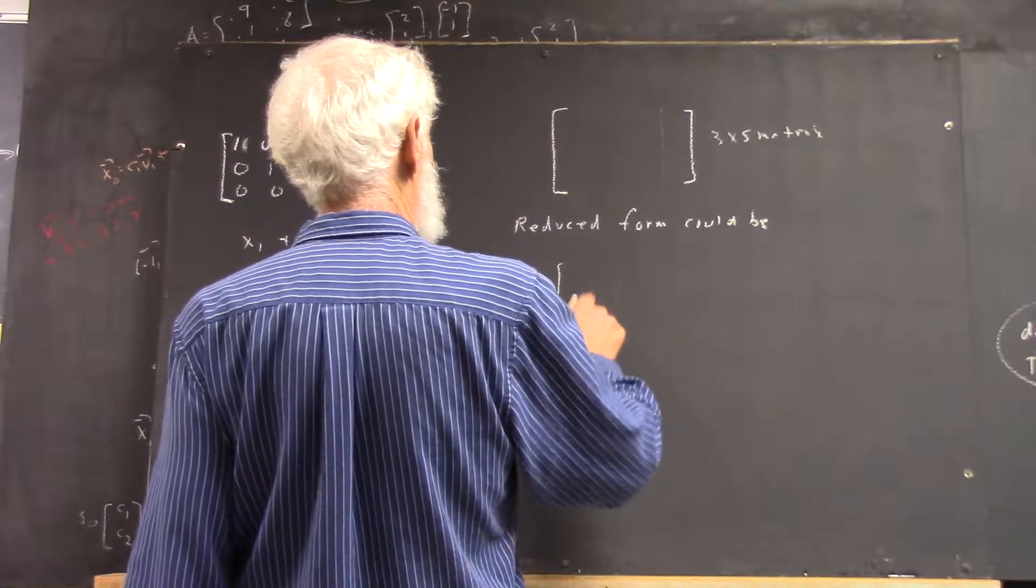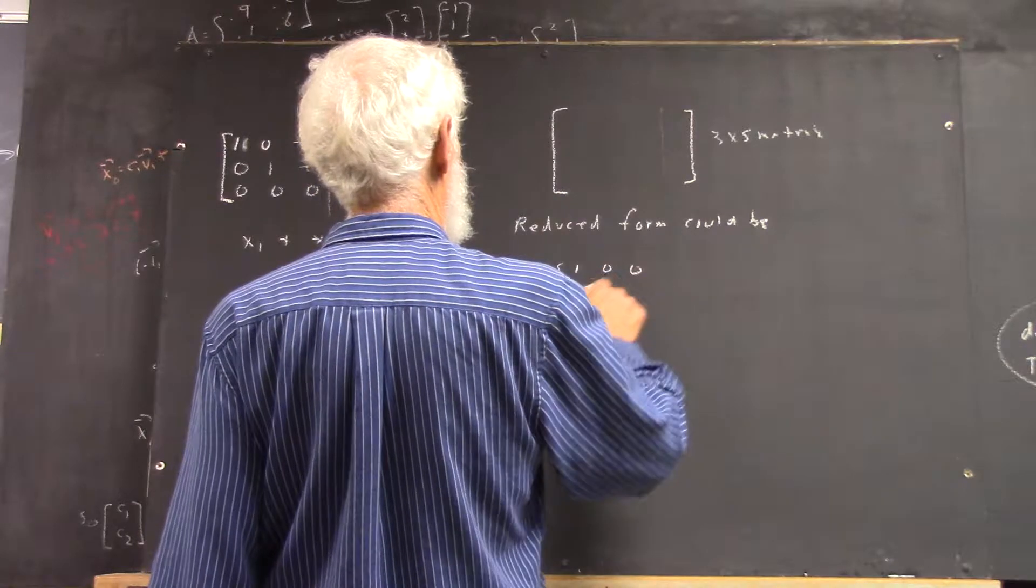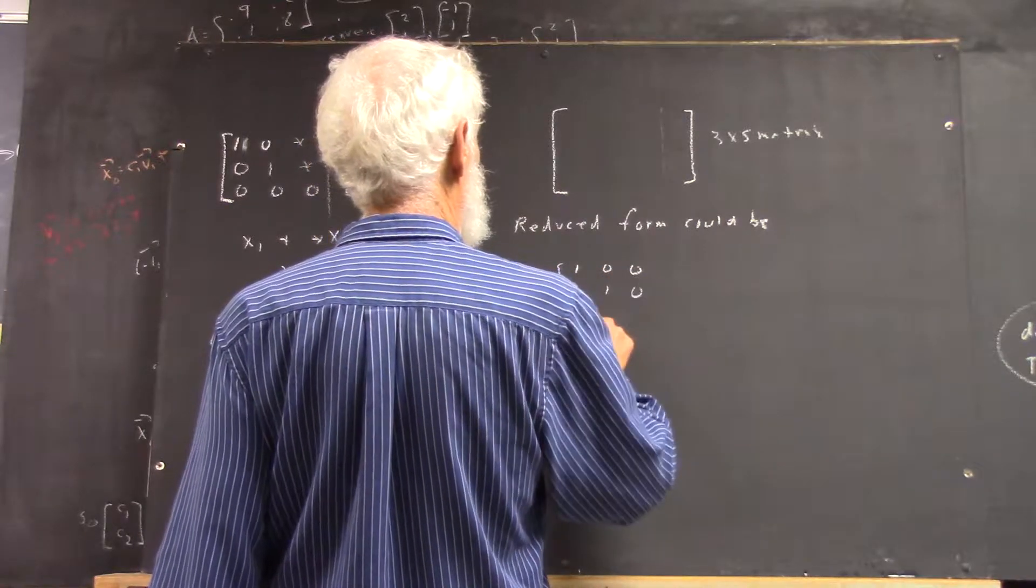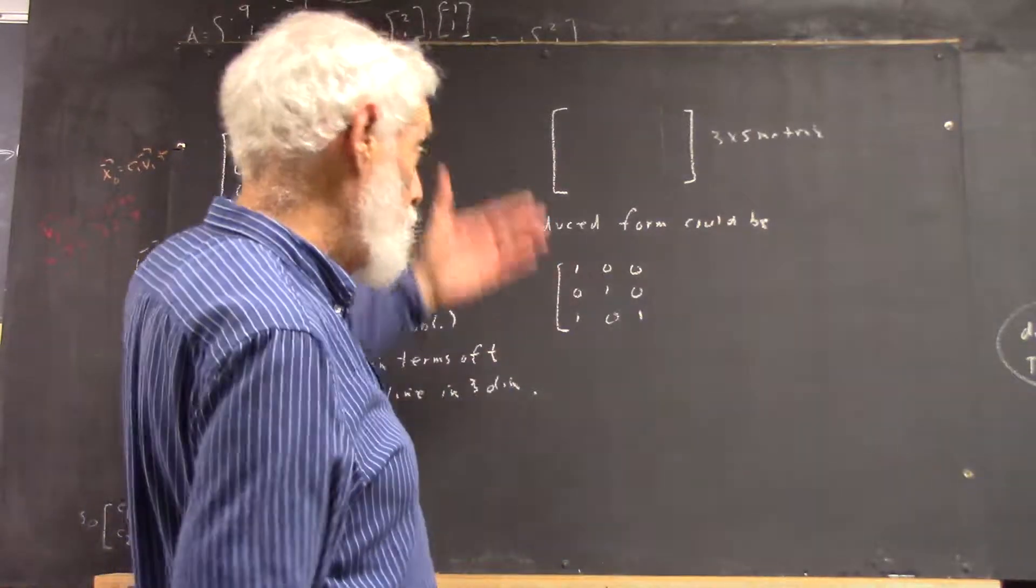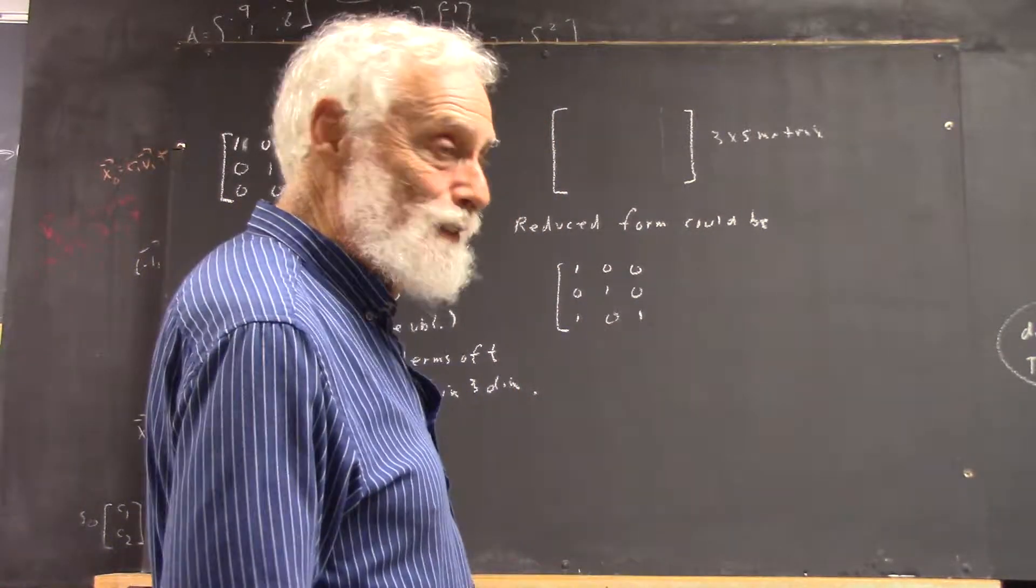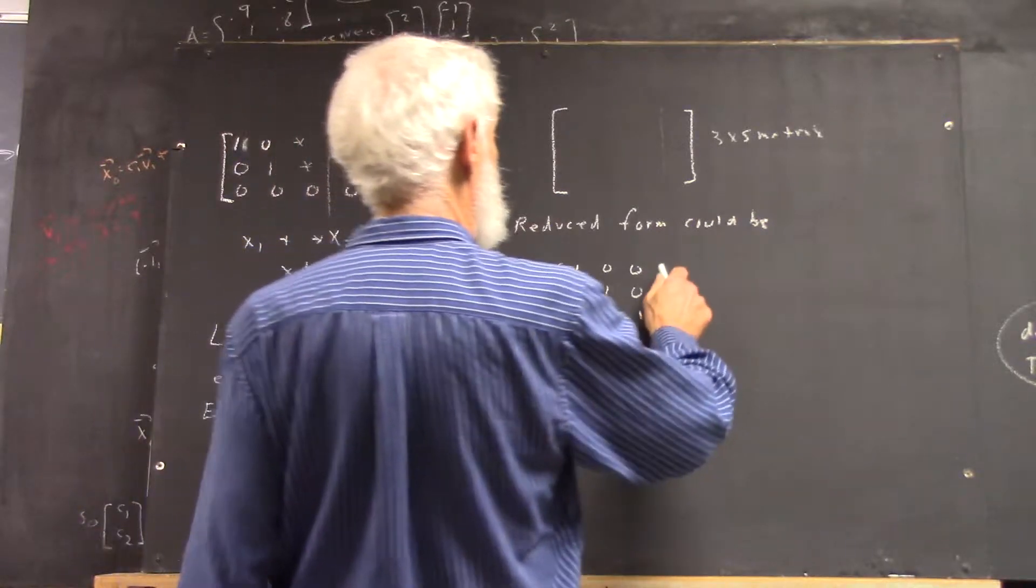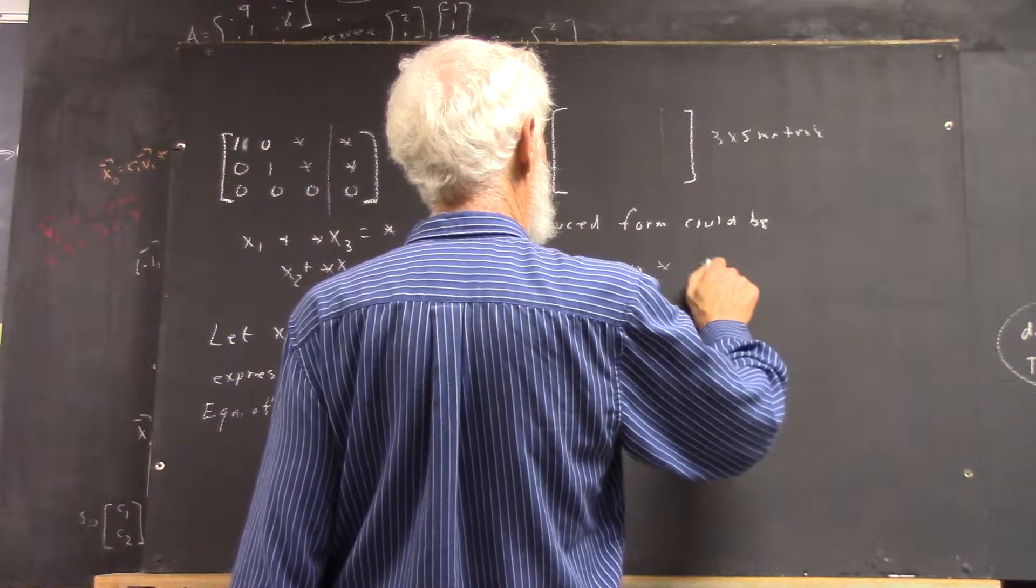In reduced form, well, it could be where you have a 3x3 identity, but you can't get more than a 3x3 identity, right? If you don't have a fourth row to make it into an identity, but you have numbers here and here.